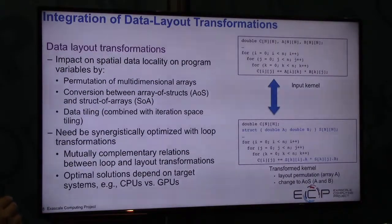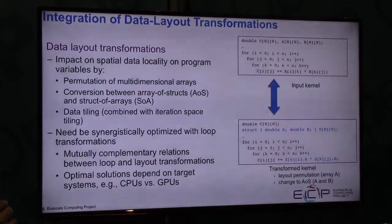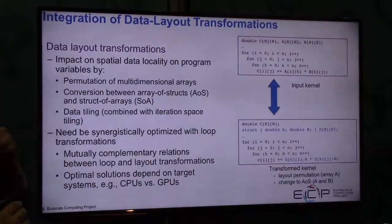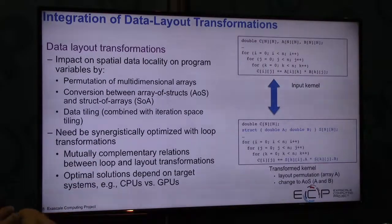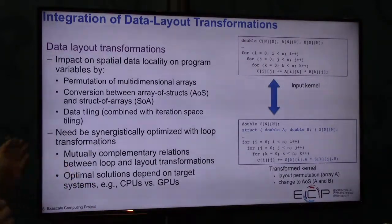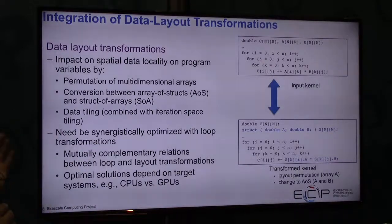Another direction we are pursuing is data layout transformations, to optimize codes based on arrays and structures and a mix of these. This will be implemented inside the LLVM compiler. The idea is that given a code based on arrays or structures, the compiler considers different combinations of arrays and structures on different levels. This depends on the target machine — results will vary between CPUs and GPUs — and it integrates analytical models that determine the benefits on different architectures.